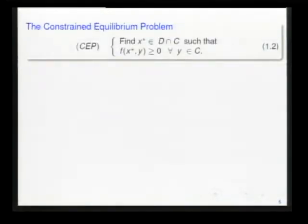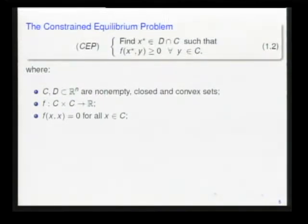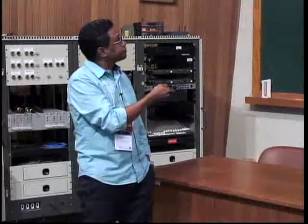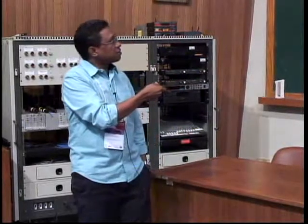The constrained equilibrium problem consists in finding a point in the intersection of the solution set of an equilibrium problem and a closed convex set D. Our assumptions: f is an equilibrium bifunction. It's a well-known result that this formulation includes the variational inequality problem. We can include the constrained variational inequality problem in the same way.